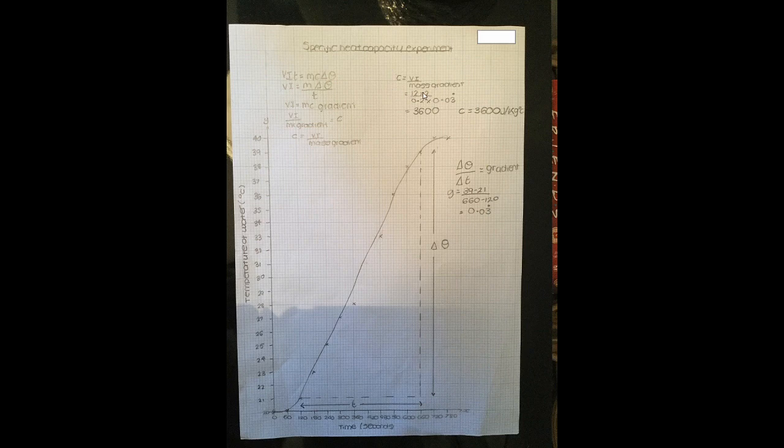You get a final value of 3600. And don't forget the unit, specific heat capacity: joules per kilogram degree centigrade. The correct answer should be 4200.